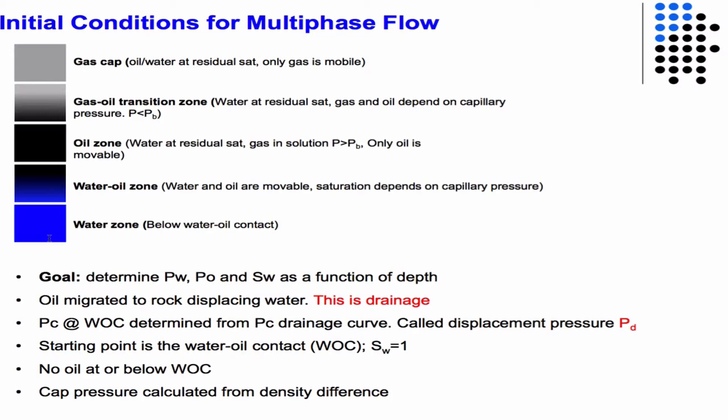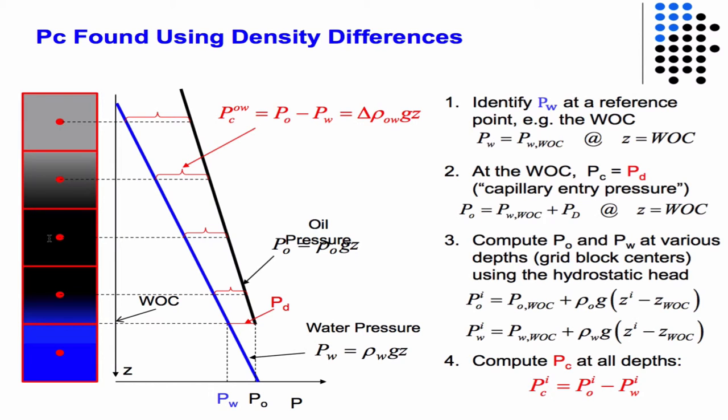Gas is in solution as long as the pressure is above the bubble point, and you can have a gas-oil transition zone and a gas cap above that. In what we're talking about here, we're going to ignore gas completely. We'll also assume a definitive water-oil contact line where saturation is one. The assumption is that oil migrated into the rock displacing the water — that's drainage — so we look at the drainage portion of the capillary pressure versus saturation curve.